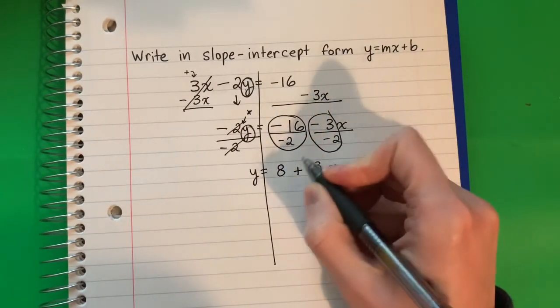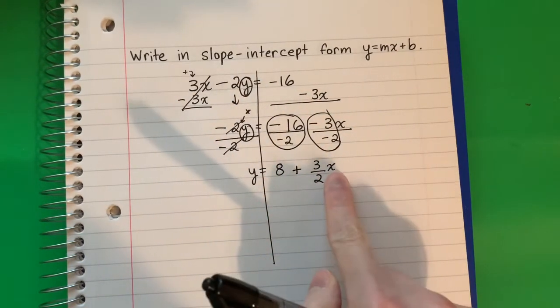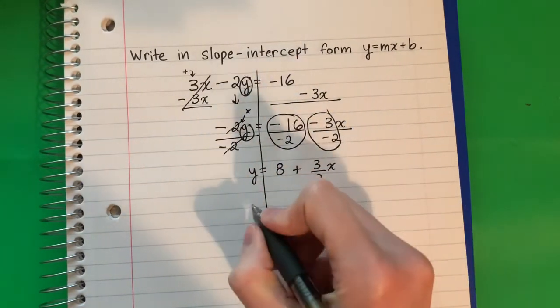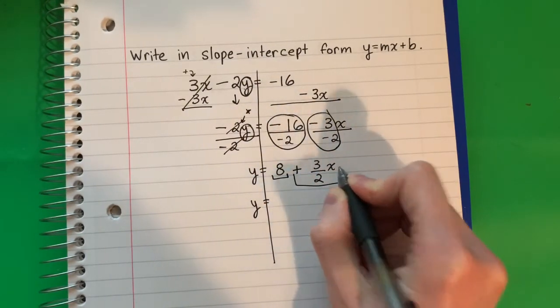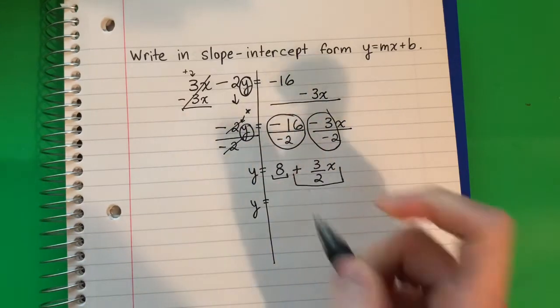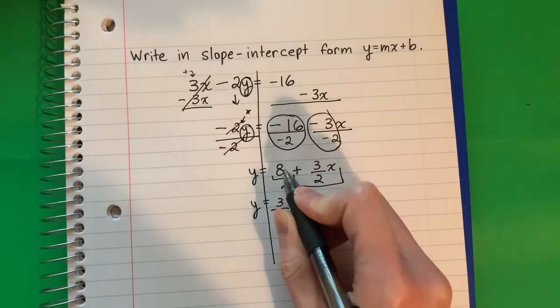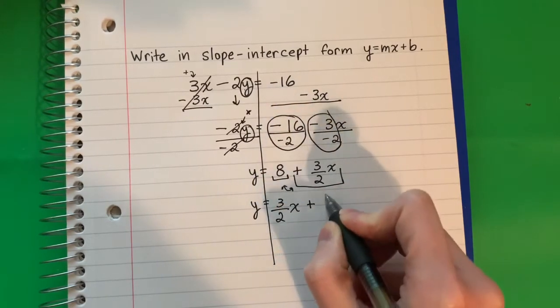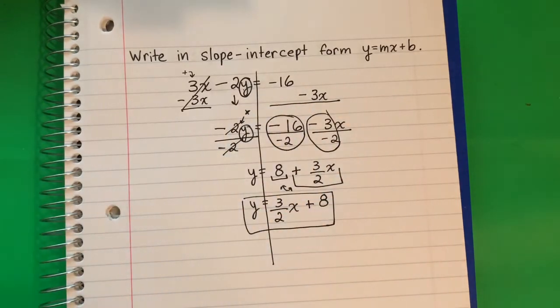And I'm going to copy down the x. Don't forget to copy down the x and don't forget your positive. And now I'm going to switch because I want that number with the x in the front. So I'm going to put 3 divided by 2x plus, because it's positive, 8.